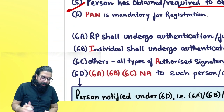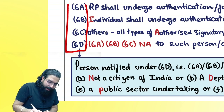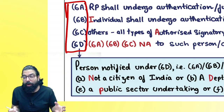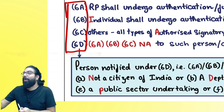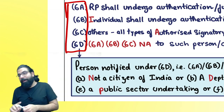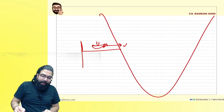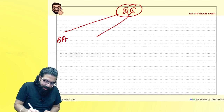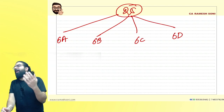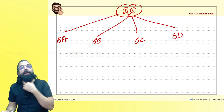Section 25(6): PAN number is mandatory for registration. Sections 25(6A) to (6D) deal with Aadhaar authentication. Many fake persons were taking registration, issuing fake invoices, passing on credit fraudulently. So government introduced Aadhaar authentication to verify identity. Under section 25(6A), (6B), (6C), and (6D), Aadhaar authentication was launched around 2020. For already registered persons pre-2020, rule 10B specifies requirements.